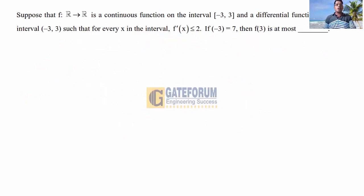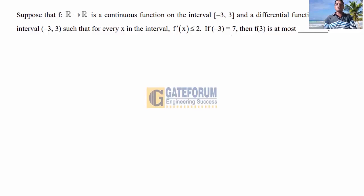Next question: suppose F from R to R is a continuous function on the closed interval [−3, 3] and differentiable on the open interval (−3, 3), such that for every x in that interval, F′(x) ≤ 2. If F(−3) = 7, then F(3) is at most. This question is from engineering mathematics, calculus, subtopic mean value theorem.